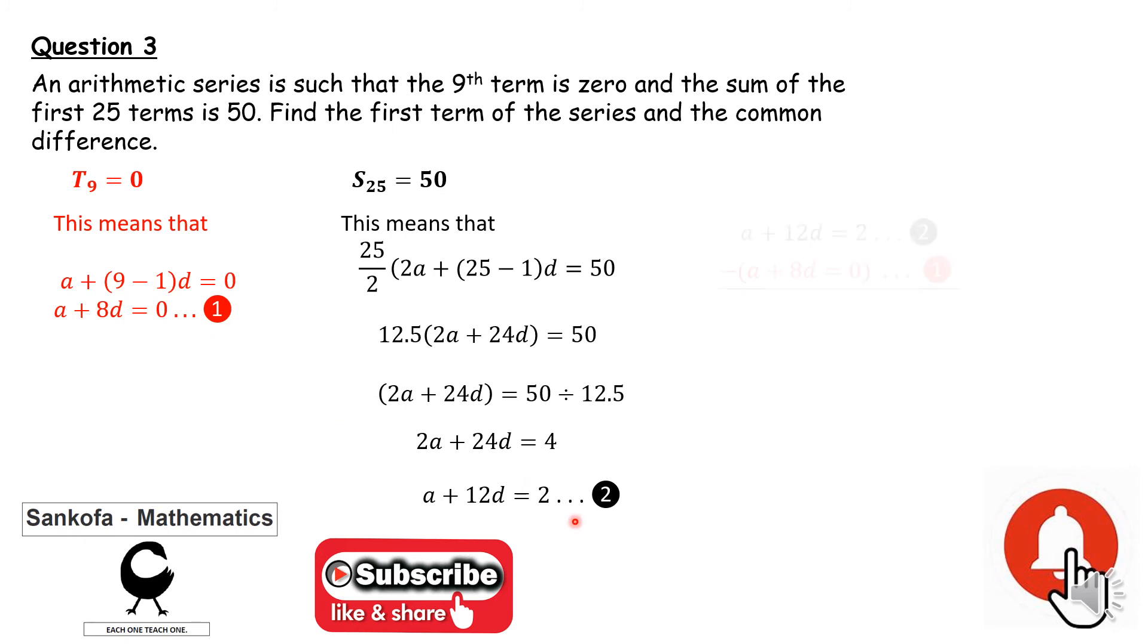I have got two equations which I'm going to solve simultaneously. I've decided to subtract equation 1 from equation 2. It doesn't matter which way around you go. The a is eliminated, leaving 4d equals 2. Therefore, d is equal to 1 half.